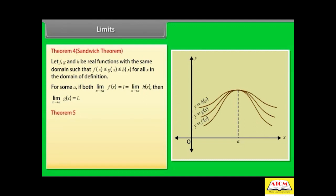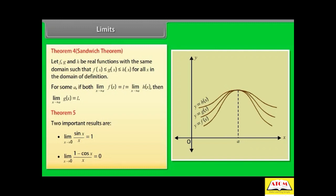Theorem 5. Two important results are: limit x→0 of (sin x / x) = 1, and limit x→0 of (1 - cos x) / x = 0.